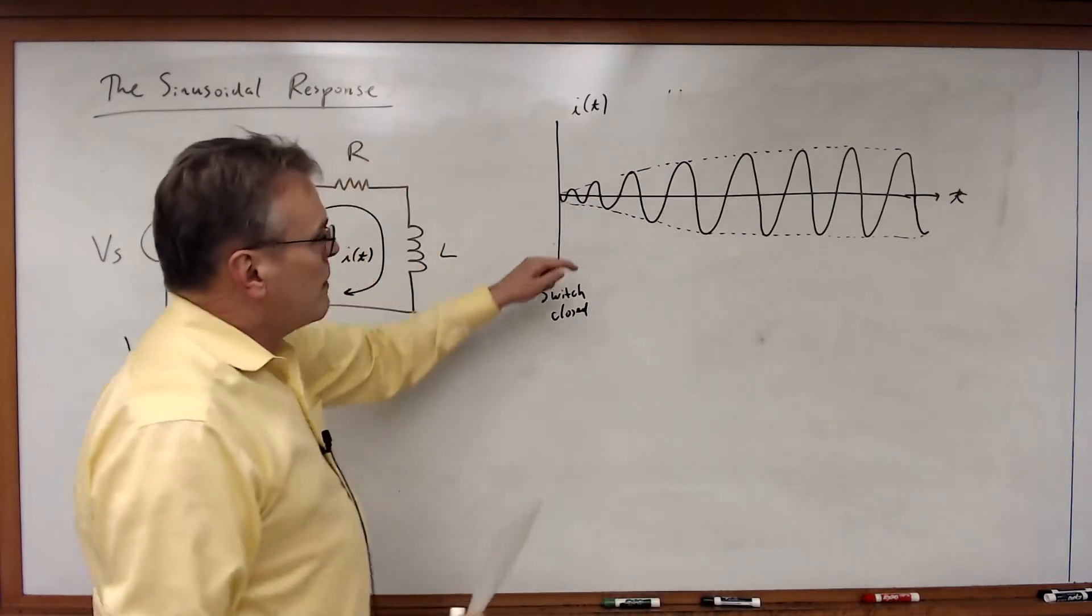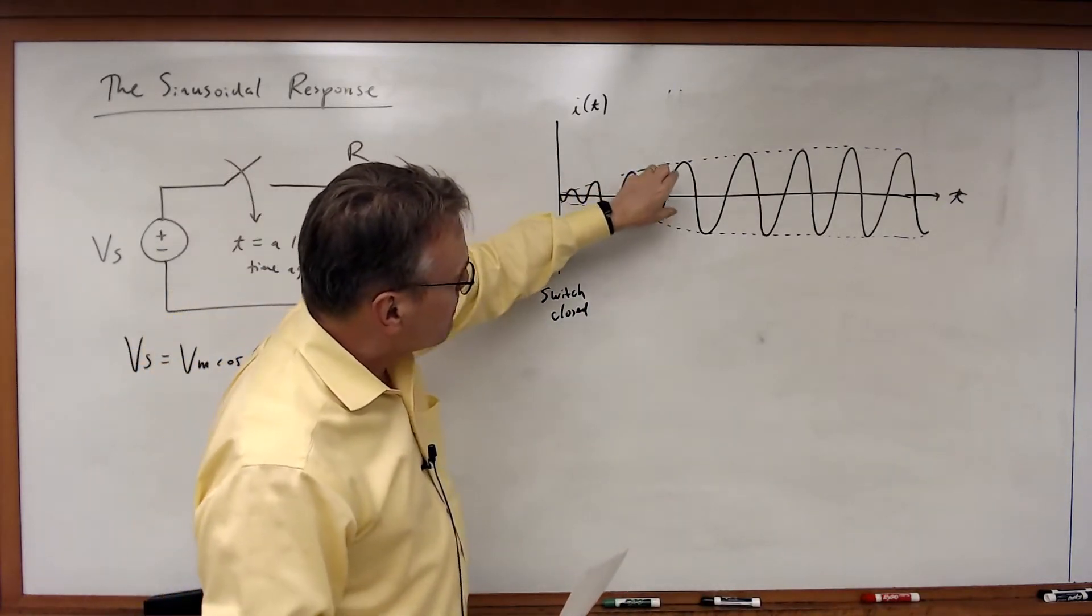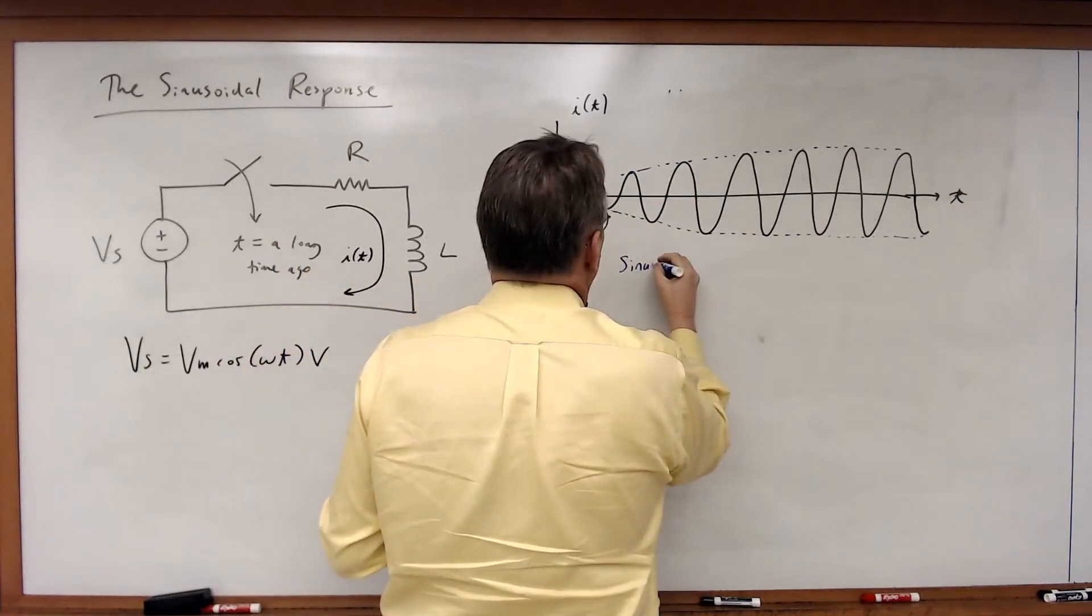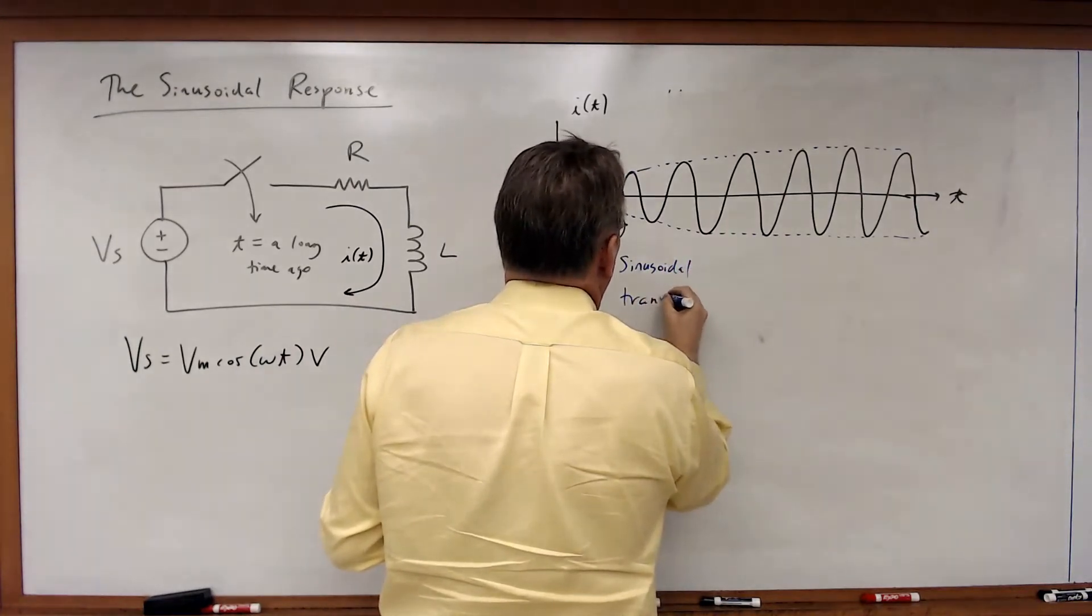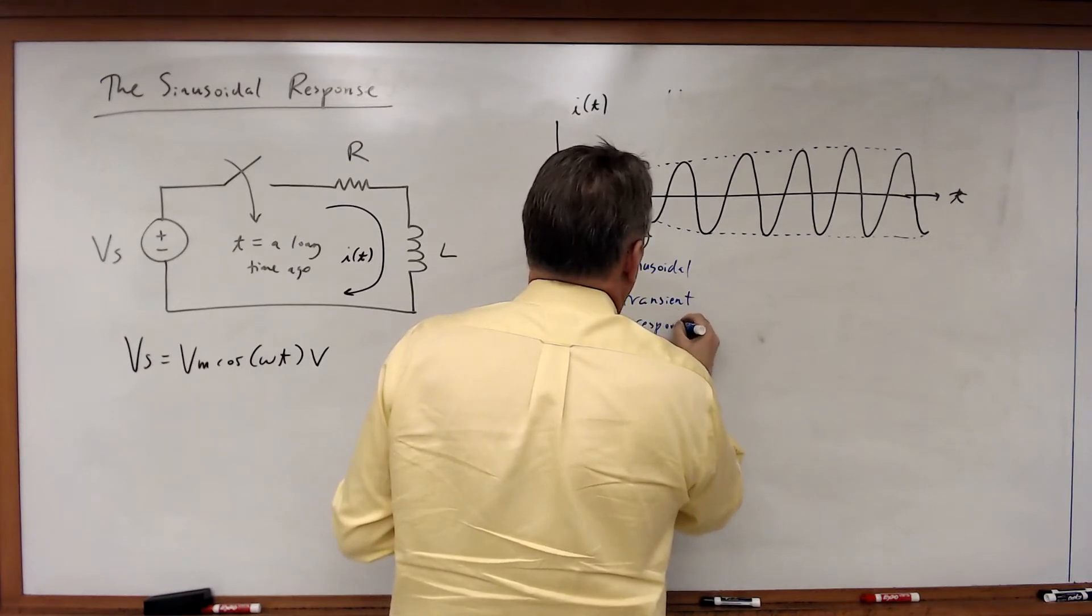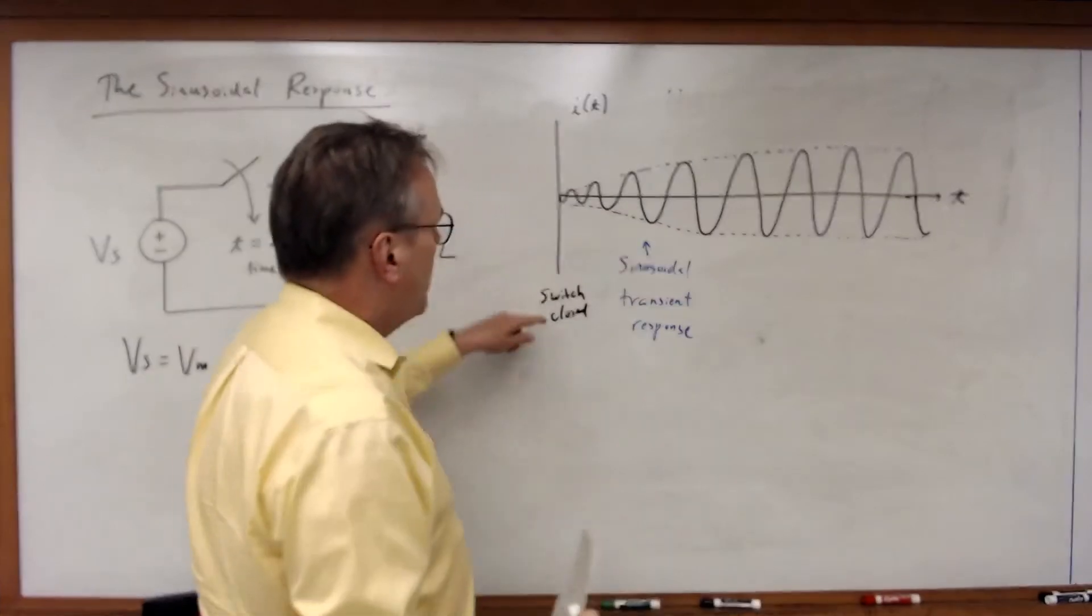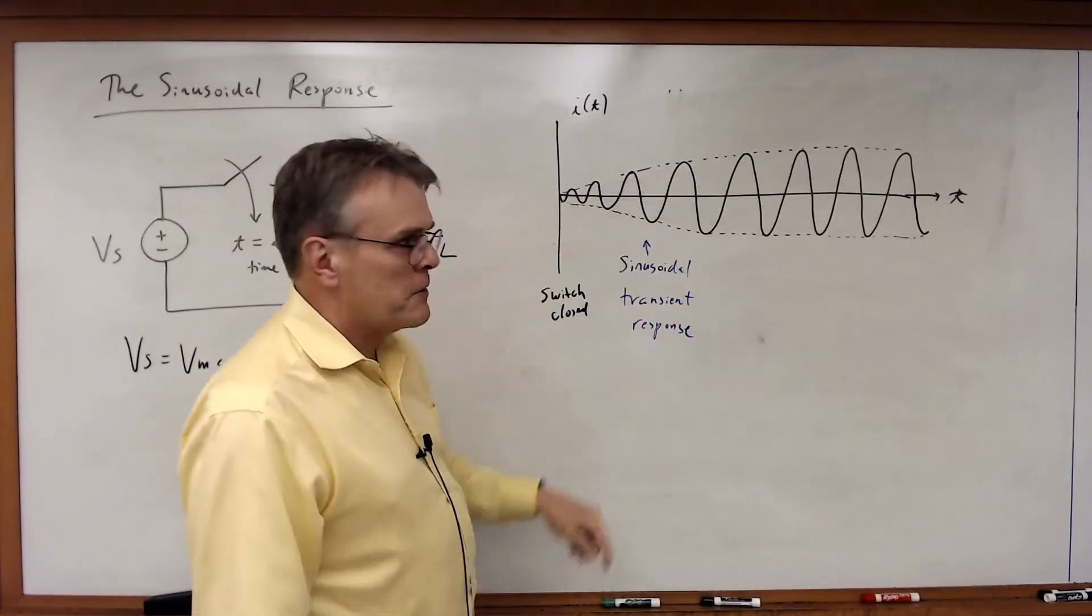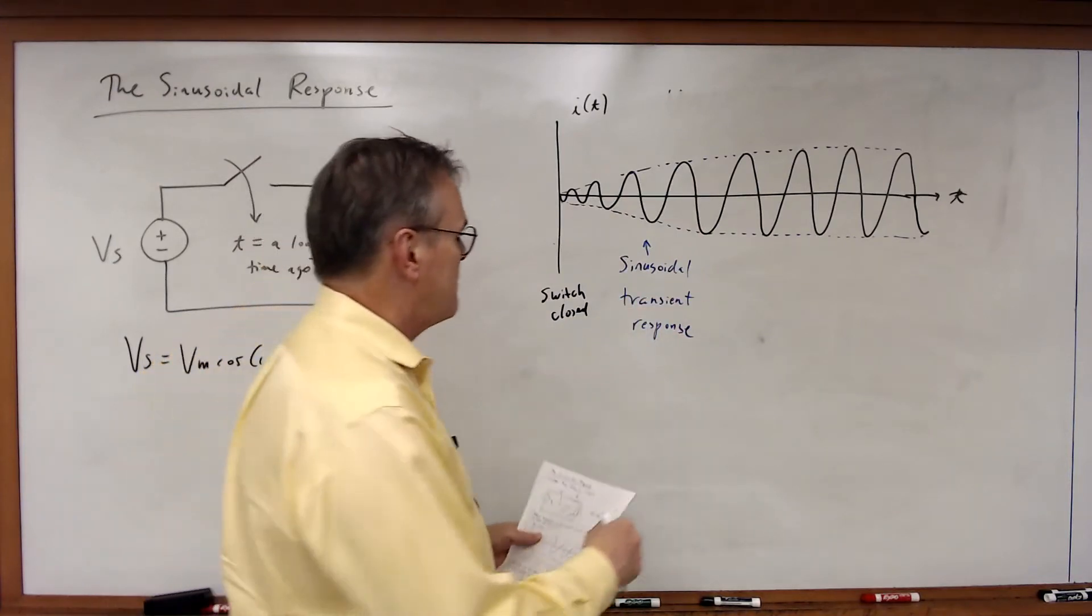Alright, now this portion here where the amplitude was building up over time, that is the sinusoidal transient response. And guess how long it takes for this sinusoidal transient response to basically build up to its maximum value and then quit changing? 5 tau.